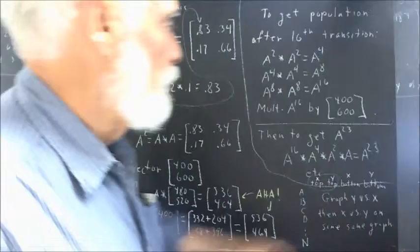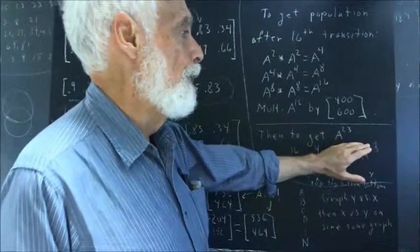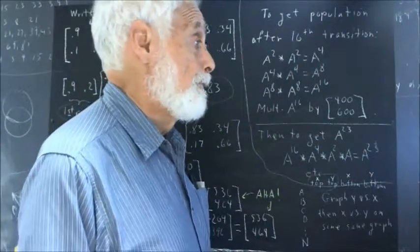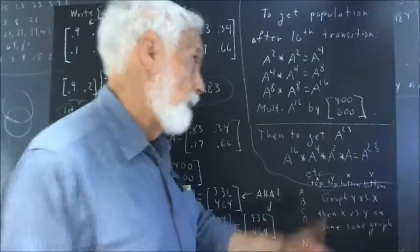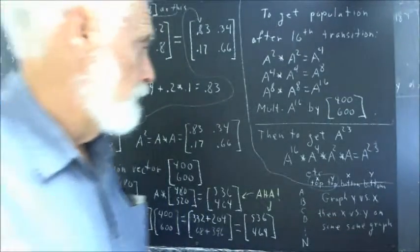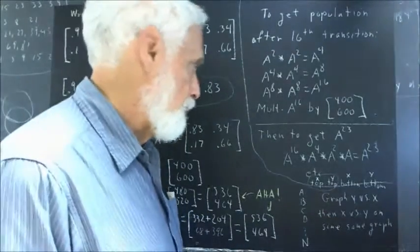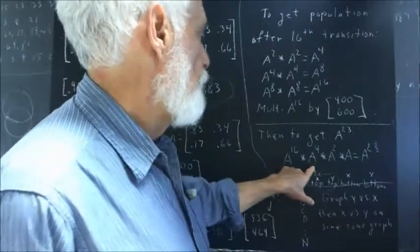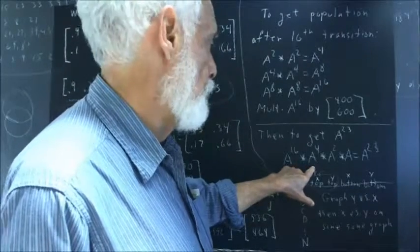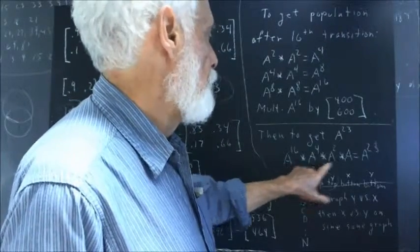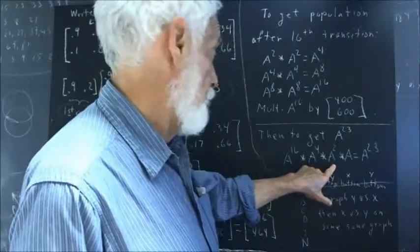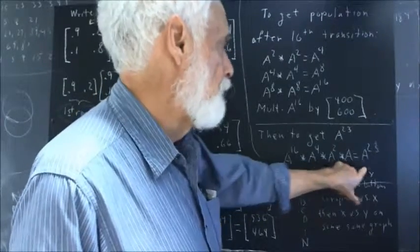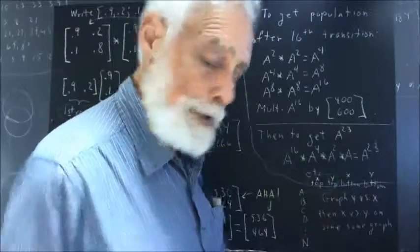Now, what if we wanted to get A to the twenty-third? How could we do that once we've done all this? People saw this pretty quickly, but you might or might not see it. If we do A to the sixteenth times A to the fourth, that's going to give us A to the twentieth. Multiply that by A squared, that's going to give us A to the twenty-second, and another A makes it A to the twenty-third.